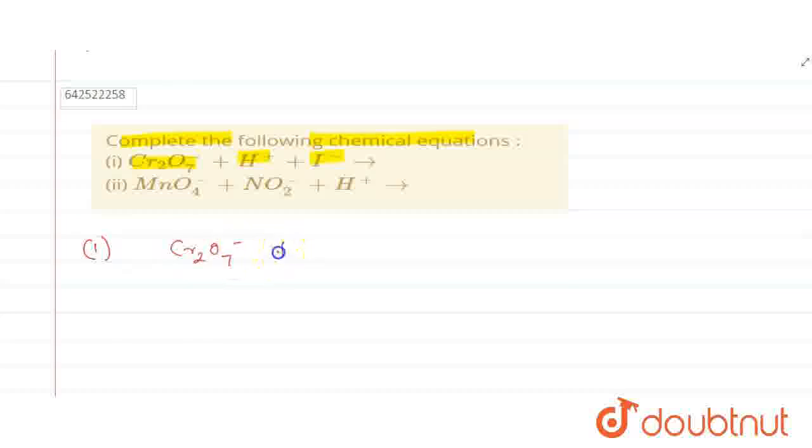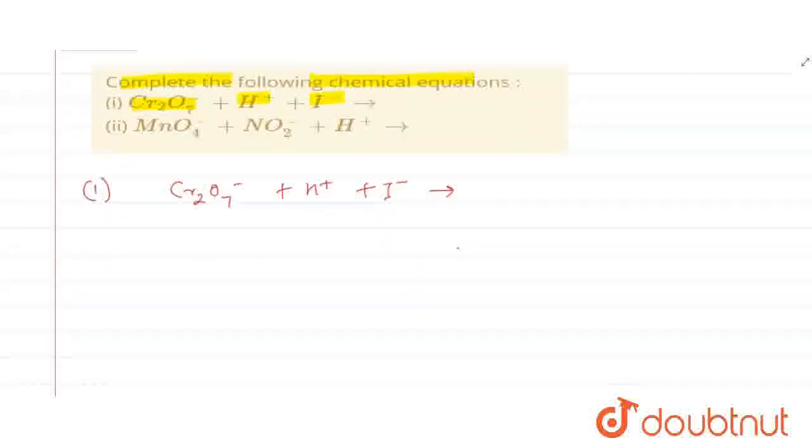First reaction is Cr2O7 2- plus H+ plus I-. For writing the product, I will write first the reduction half. Reduction half is the gaining of electrons. So, Cr2O7 2-, here it will have oxidation state +6. It gets converted into Cr+3.